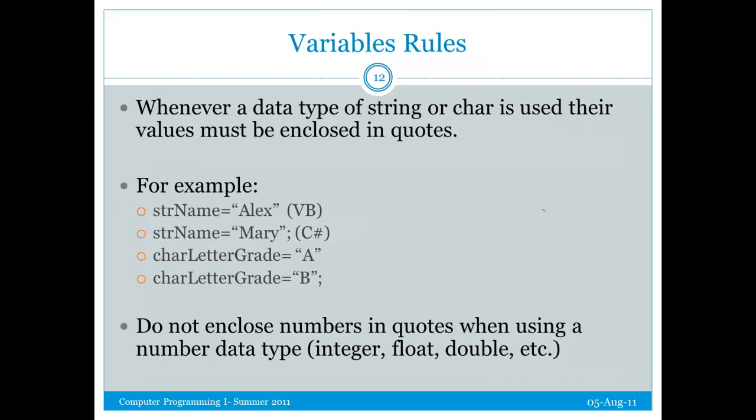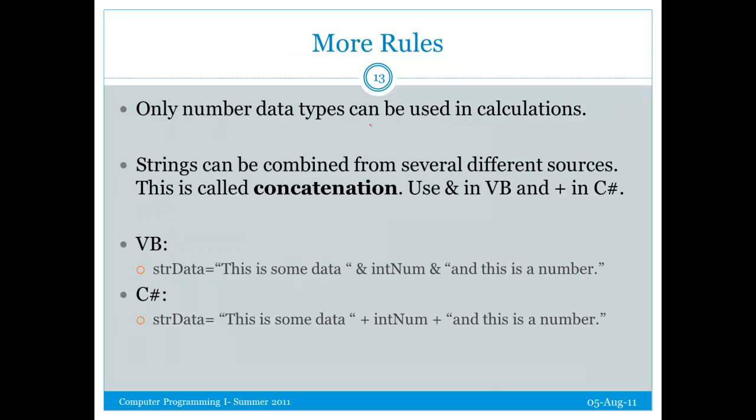Alright, some rules for variables. If it's a string or a character, it must be in quotes. Notice, here is a string variable and here is a character variable. And notice, the values are in quotes. Now we do not enclose numbers in quotes when using a number data type. So if I have intGrade equals 62, I do not put that in quotes. However, if a strGrade equals 62, I still put it in quotes. A string data type requires quotes, whether it's numbers or letters.